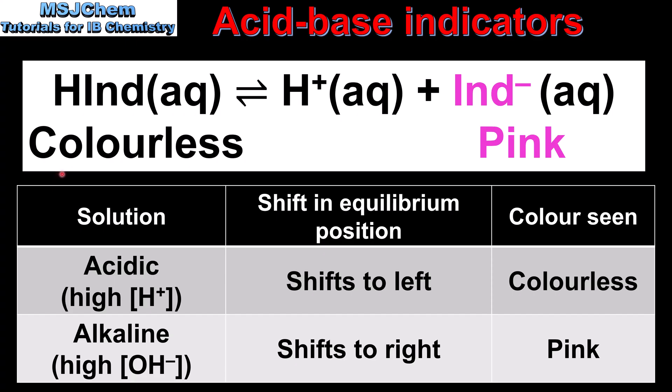To explain how an Acid Base Indicator works, we'll apply Le Chatelier's principle, which can be used to predict in which direction the equilibrium position will shift when changes are made to a system at equilibrium. Because we have an equilibrium existing between the unionized form of the weak acid and the ionized form, we can use this principle to explain which color will be seen in an acidic or alkaline solution. In an acidic solution, which has a high concentration of hydrogen ions, the equilibrium position will shift to the left, in the direction of the unionized form of the weak acid, which is colorless.